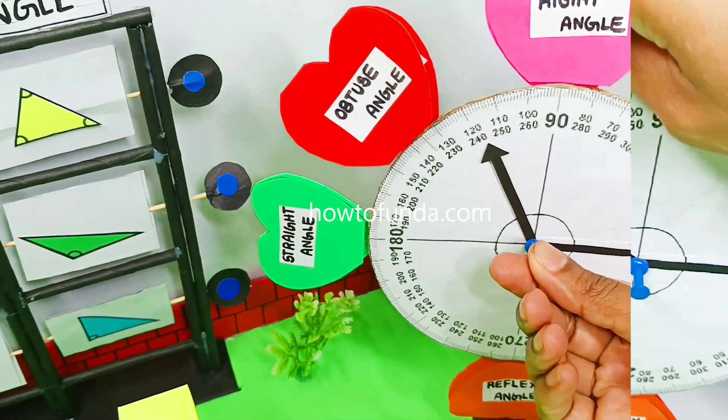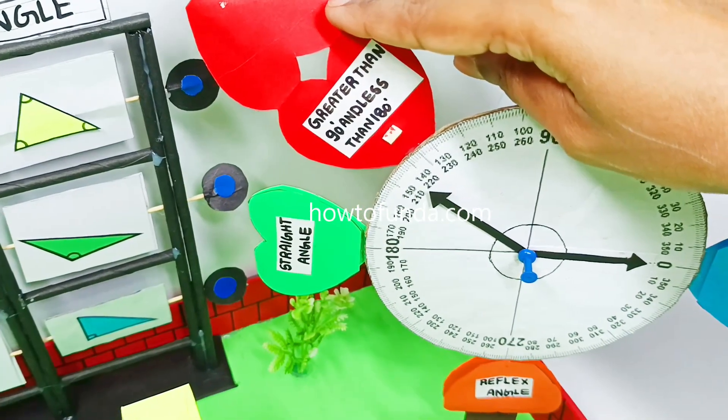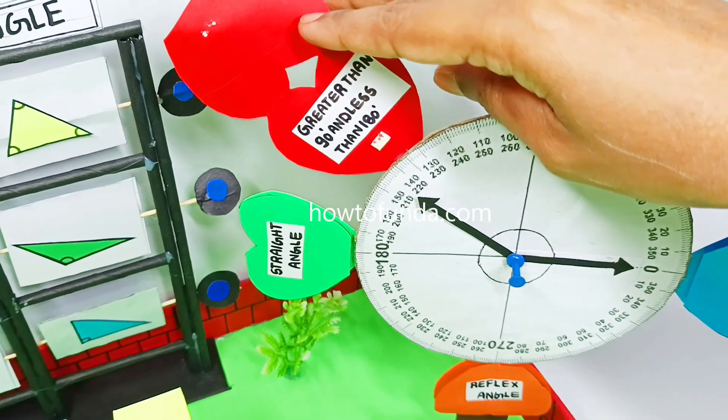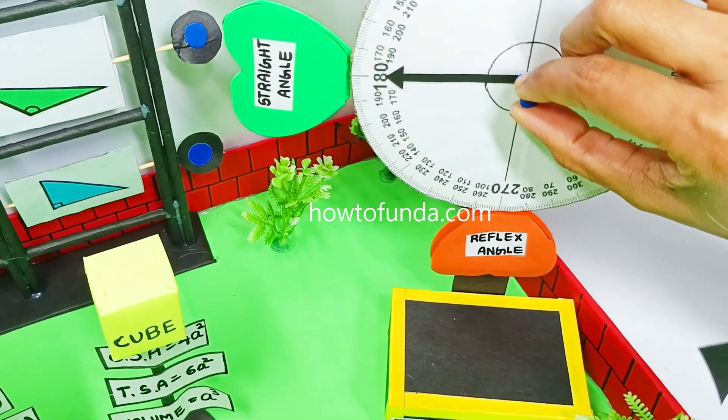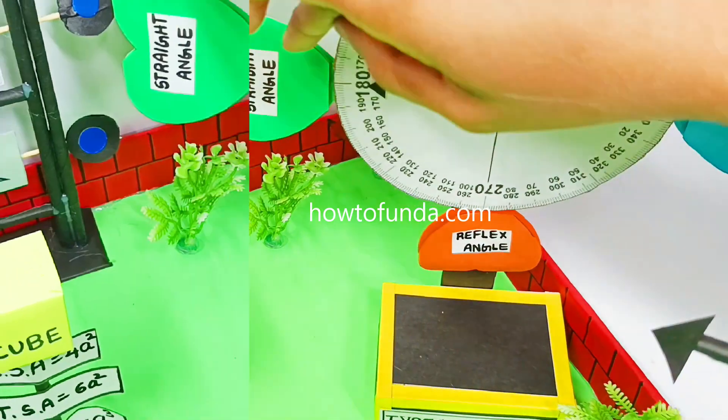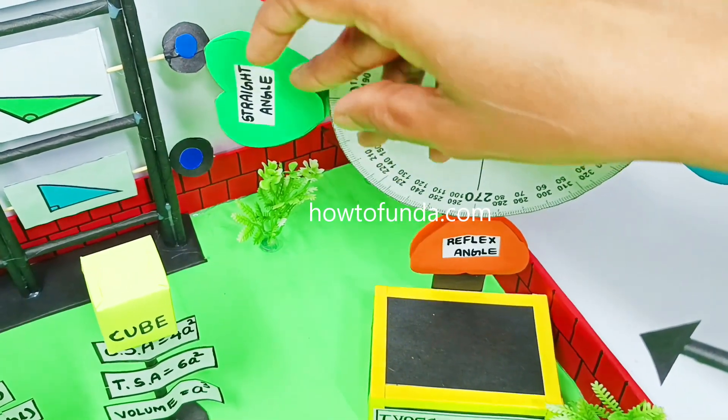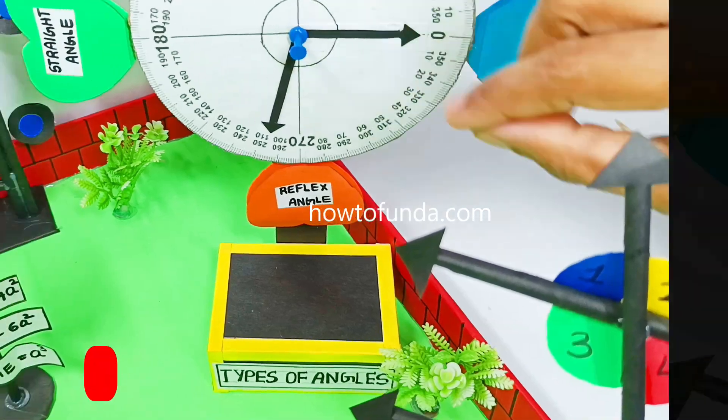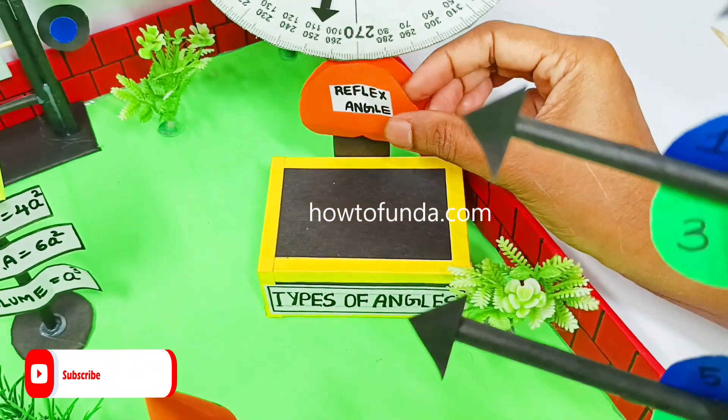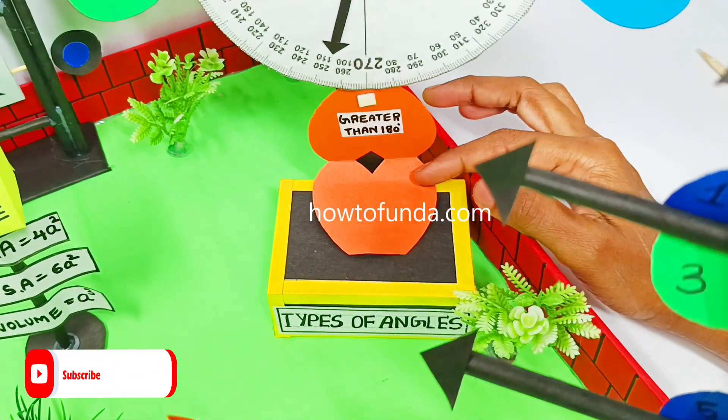We have straight line which is exactly 180 degrees, reflex angle which is greater than 180 degrees, and we have full angle which is exactly 360 degrees.